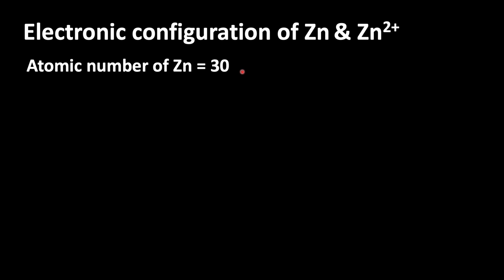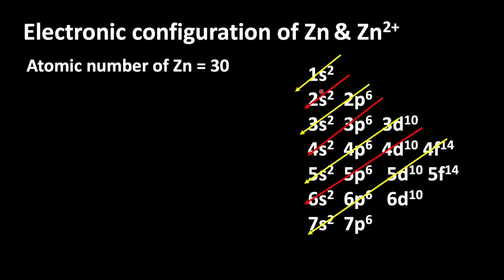To write electronic configuration, we should know the atomic number. Zinc has atomic number 30. Here you can see the order of filling orbitals in increasing energy level. After filling the 1s orbital, electrons enter into 2s, then 2p, 3s, 3p, 4s, and 3d.